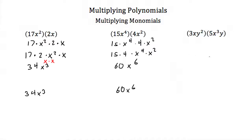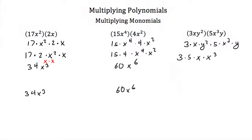Let's look at this last example. We have two variables in here, but that doesn't really change anything. These are all multiplied together, so this is the same as 3 times x times y squared times 5 times x cubed times y. And since these are all multiplied together, I can rewrite this as 3 times 5 times x times x cubed times y squared times y.